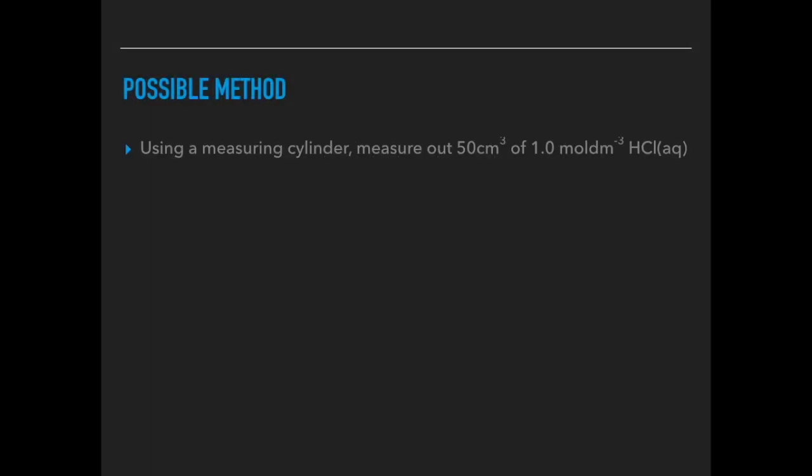The first thing, using a measuring cylinder measure out 50 cm cubed of 1.0 mol per dm cubed hydrochloric acid. You don't have to choose the exact volume and concentration I've gone for but the acid's going to end up in a polystyrene cup so we don't want too much and we want a decent temperature rise out of the reaction. If you went for a low concentration you probably wouldn't get a big enough temperature rise. Into a separate measuring cylinder measure out the same volume and concentration of sodium hydroxide solution. You'll see why that's important when we come to the calculation.